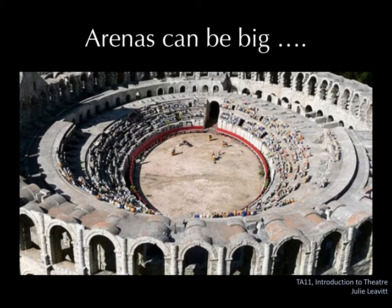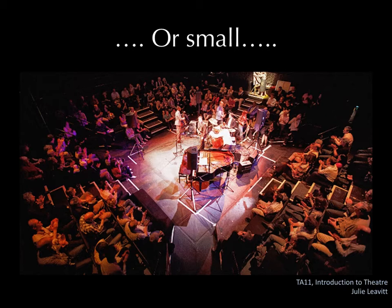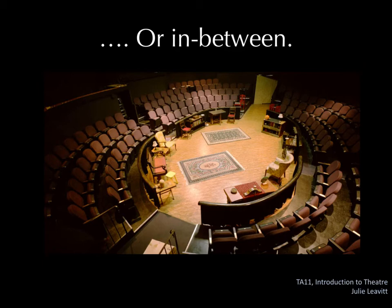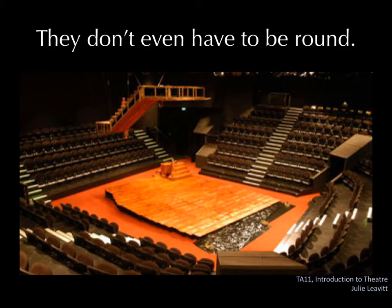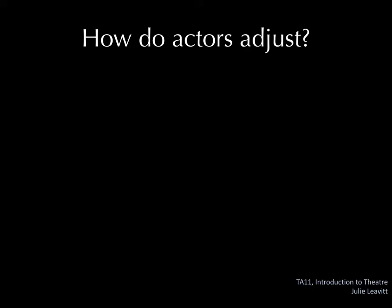It's important to remember when we are talking about arenas as a theatrical space, arenas can be quite big — here's a Roman Colosseum that could hold thousands. But they can also be quite small, maybe 75 or 80 people, and they're quite close to the stage. And as I said at the top of the lecture, arena spaces don't even have to be round. Although we do like to call it theater in the round because the audience surrounds the stage.